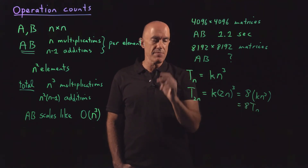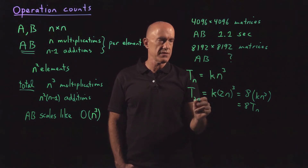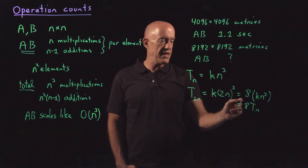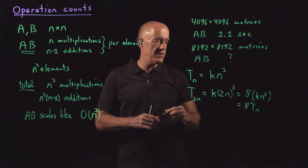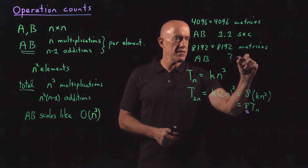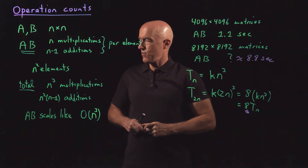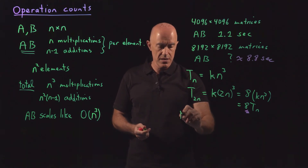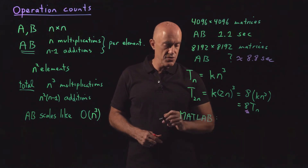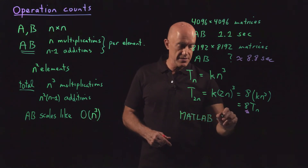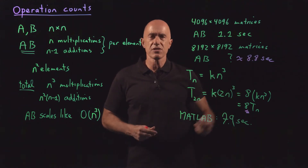So the time to multiply an 8192 by 8192 matrix should take 8 times longer than the 4096 by 4096 case. This means it should take approximately 8.8 seconds. When I actually time it in MATLAB on my computer, it took 7.9 seconds instead of 8.8 — so it's not an exact estimate, but you don't need an exact estimate.